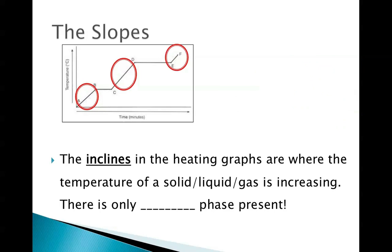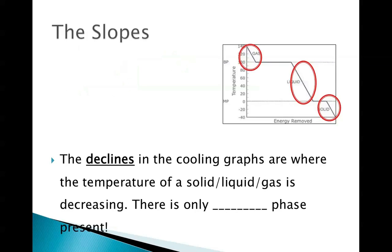The inclines, which are the ones we find in the heating graphs, are when the temperature of a solid, liquid, or gas is increasing. So on these slopes, there's only ever one phase present — either solid or liquid or gas — with their temperature increasing, which also means that their particles are moving faster.